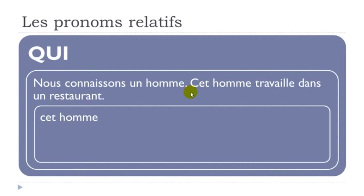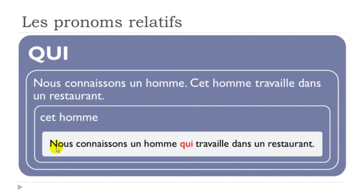We use 'qui' because in the second sentence 'cet homme travaille dans un restaurant', 'cet homme' is the subject of the verb. That's why we use 'qui' — it can replace a person or a thing. The combined sentence is: 'Nous connaissons un homme qui travaille dans un restaurant.' Just put 'qui' before the verb.